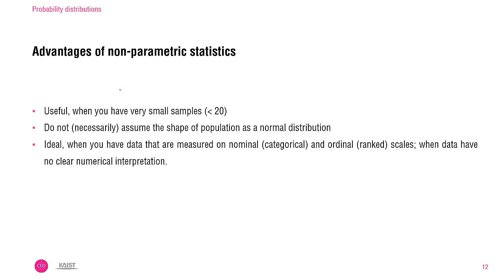Second, it is not necessary to assume the shape of a population as a normal distribution. So when the data shape is something like this, or something like this, so they look quite different from the normal distribution. So in such a case, you can take the non-parametric alternatives.